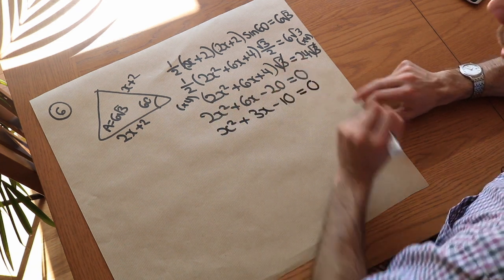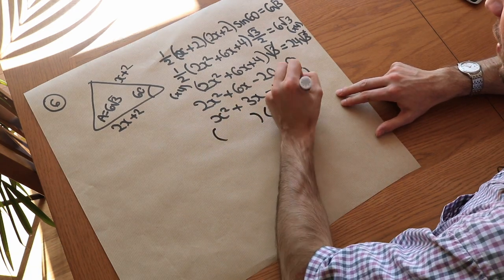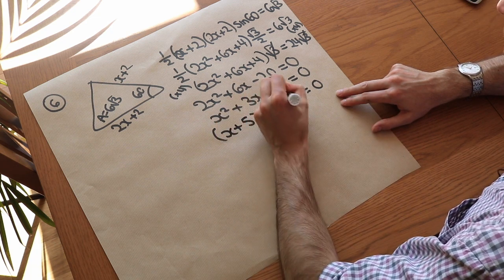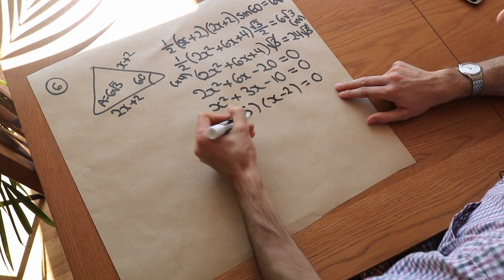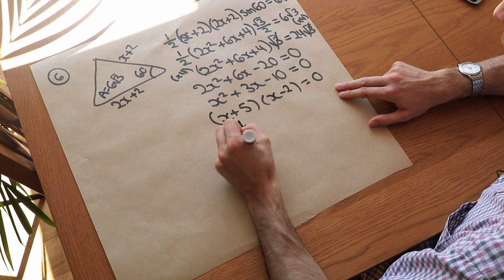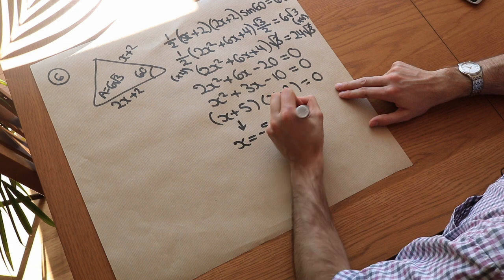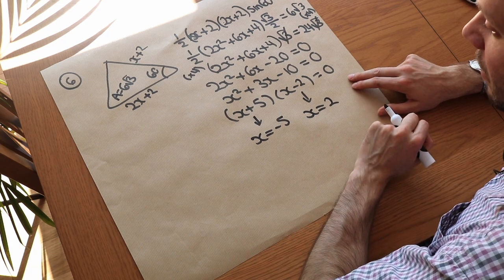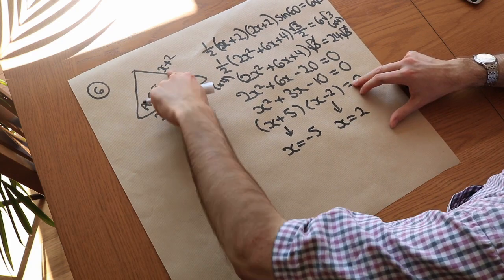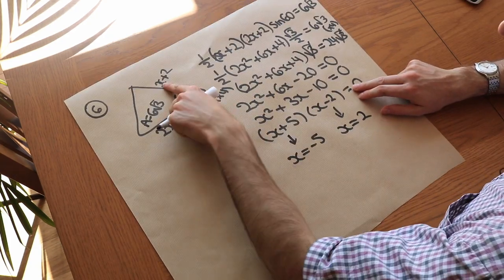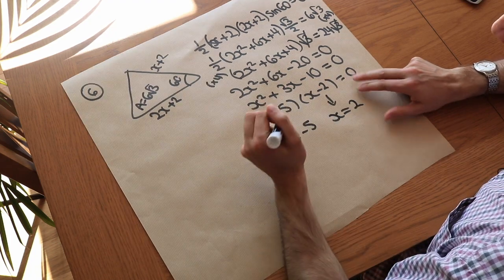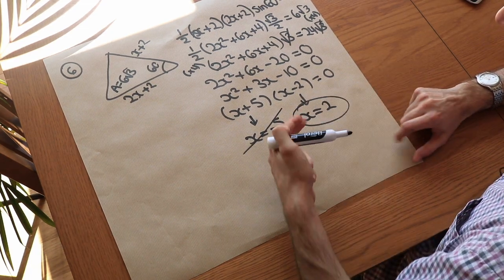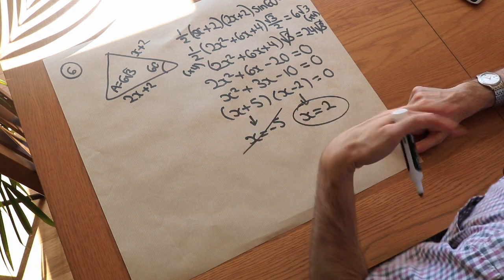This factorises as (x + 5)(x − 2) equals 0, giving x equals −5 or x equals 2. Since the side length x + 2 would be negative if x equals −5, that solution is rejected. Therefore x equals 2 is the valid answer. In applied problems, always check which solution is physically meaningful.